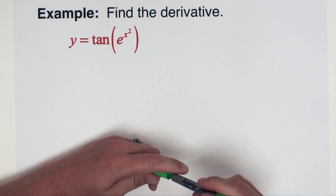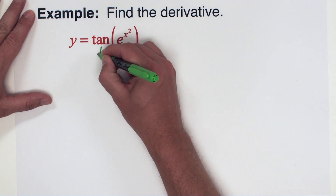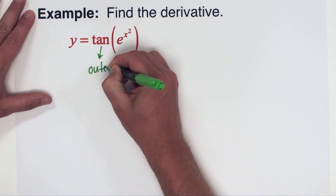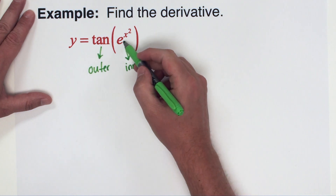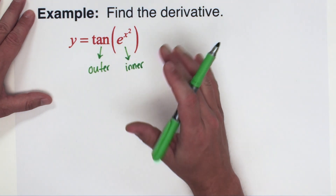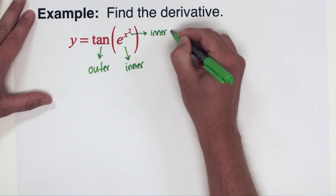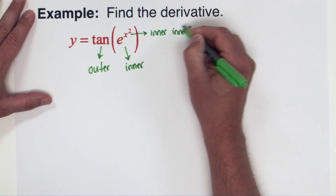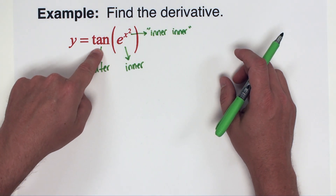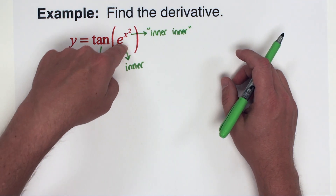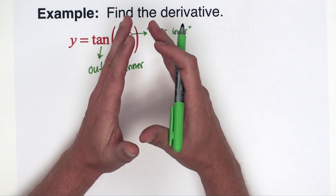Our next example: y equals the tangent of e raised to the x squared. Here the trig function is the outer function, and e raised to the x squared is the inner function. But notice that e to the x squared is not just e to the x — it itself has an inner function, the x squared. After the tangent layer, we move to the e layer, then to the x squared layer, working from the outside in.